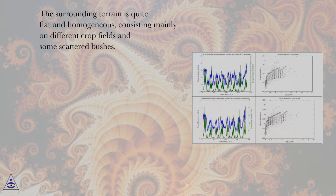The surrounding terrain is quite flat and homogeneous, consisting mainly of different crop fields and some scattered bushes.